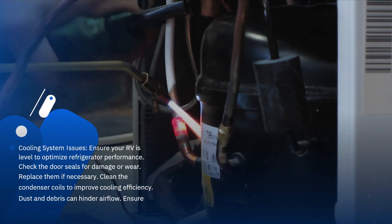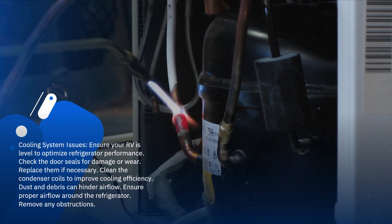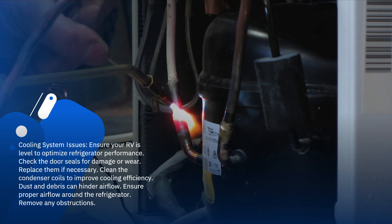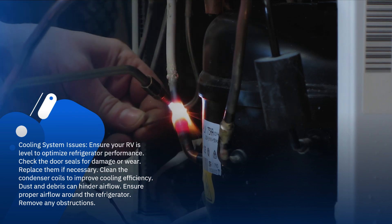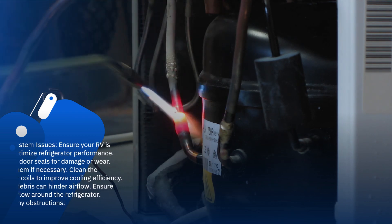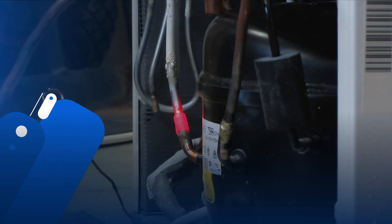Cooling System Issues – Ensure your RV is level to optimize refrigerator performance. Check the door seals for damage or wear. Replace them if necessary. Clean the condenser coils to improve cooling efficiency. Dust and debris can hinder airflow. Ensure proper airflow around the refrigerator. Remove any obstructions.